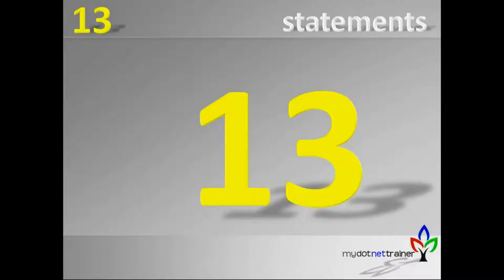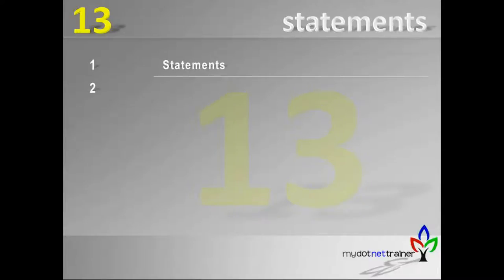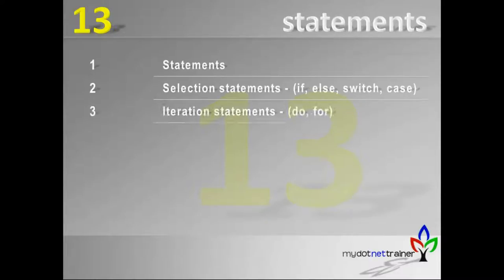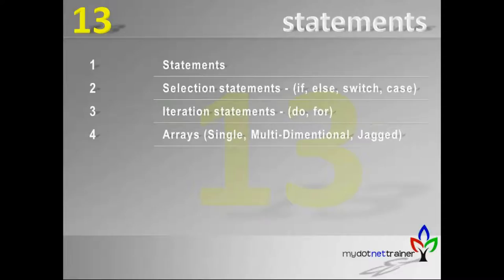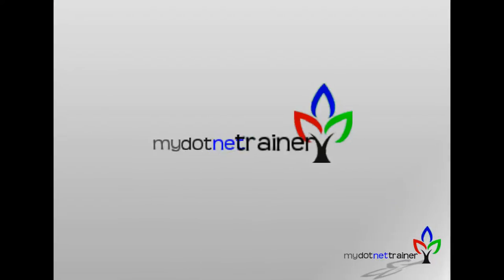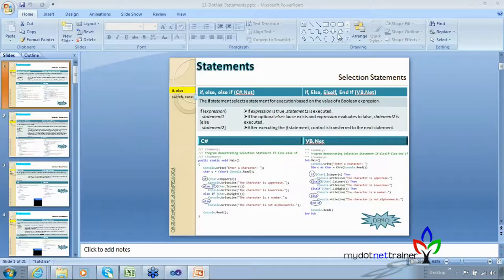We are in session 13 today and we'll look into the C-Sharp statements. The statements in C-Sharp include the statements overview, selection statements which are if, else, switch case, and the iteration statements such as do, for. We'll also see single dimension arrays, multi-dimension arrays, and jagged arrays in this session. We're going to compare each of these statements with VB.NET, with code side-by-side for comparison.